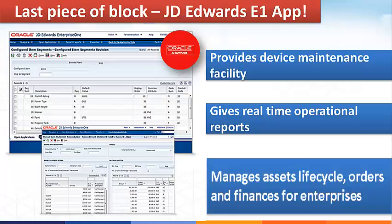And lastly, the final piece of the puzzle: JD Edwards Enterprise One. JD Edwards E1 is an integrated application suite of comprehensive enterprise resource planning software that combines business value, standards-based technology, and deep industry experience into a business solution. Data fetched from the orchestrator is used in JD Edwards E1 to provide device maintenance facilities. Oracle JD Edwards E1 OneView reporting, as a real-time reporting solution, lets you design and personalize data into charts, lists, graphs, etc. JD Edwards E1 applications also help in managing asset lifecycle, orders, and enterprise finances.